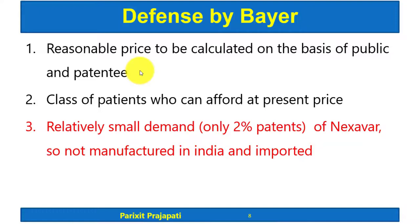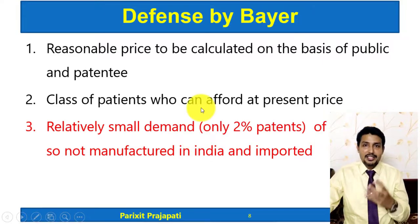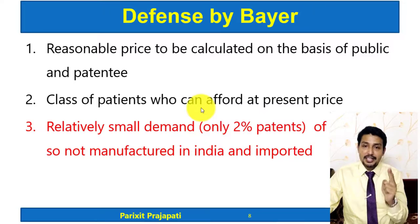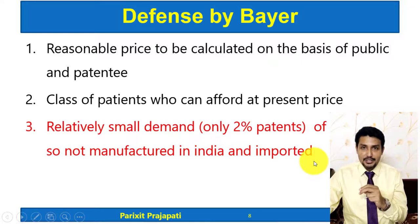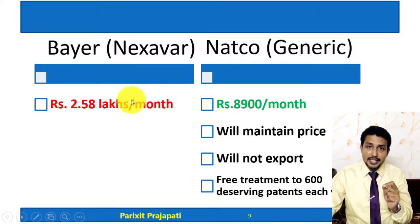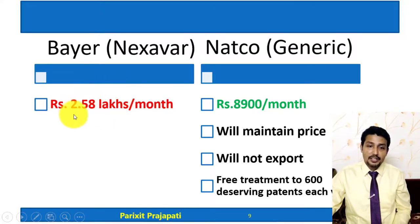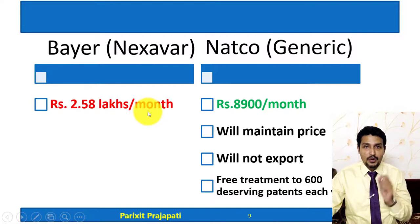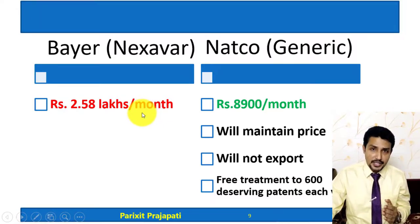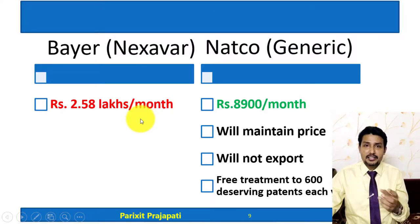Bayer's third defense actually worked against them, because they themselves said there is relatively small demand — which implies the patent is not being worked in India. Additionally, stating that they are importing from outside went against them, since import alone is not considered sufficient working of a patent. Another major issue was the price: the treatment cost including Nexavar was approximately ₹2.5 lakhs per month, and patients needed to take it for a longer duration, making the total cost of treatment very high and unaffordable for the average Indian.